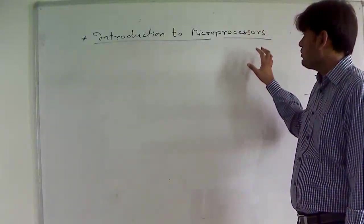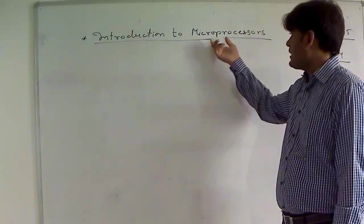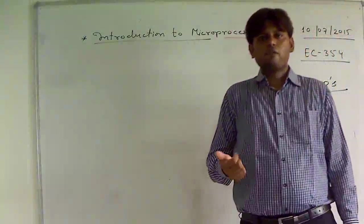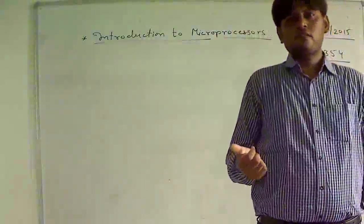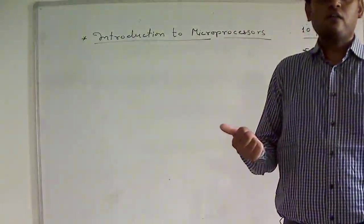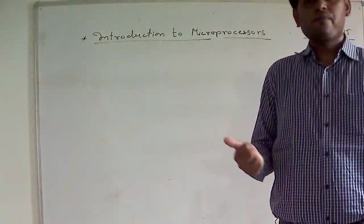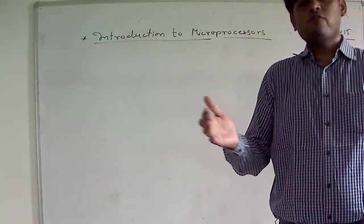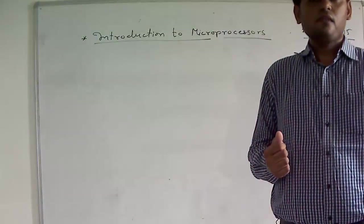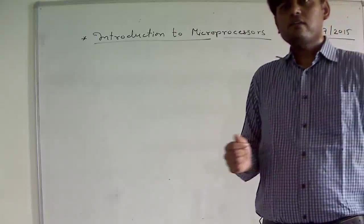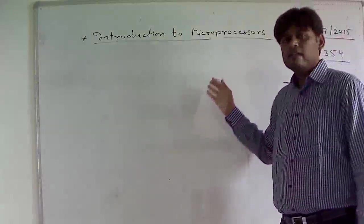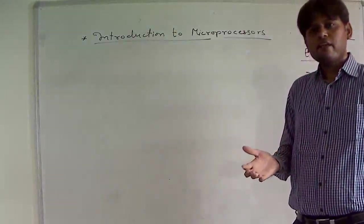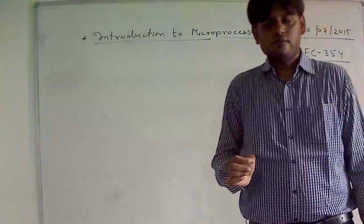Let us first go with what a microprocessor actually is. A microprocessor is normally a programmable control logic device which is being used to turn on and off devices. Basically, as the microprocessor is a digital device, it can understand only 0s and 1s.